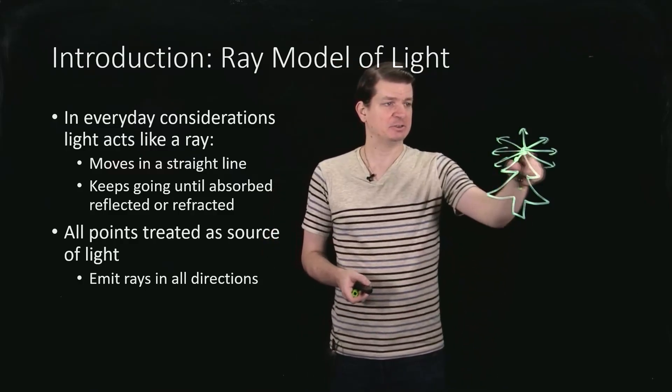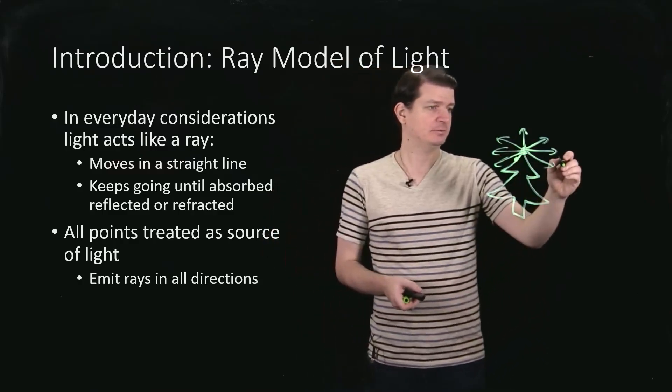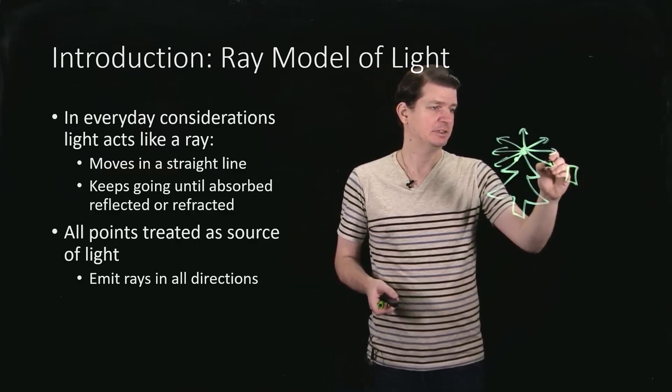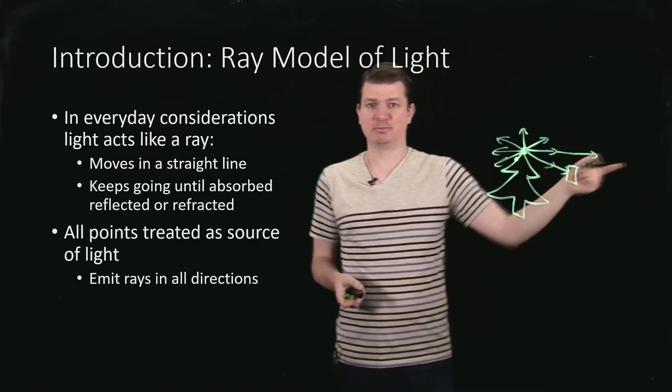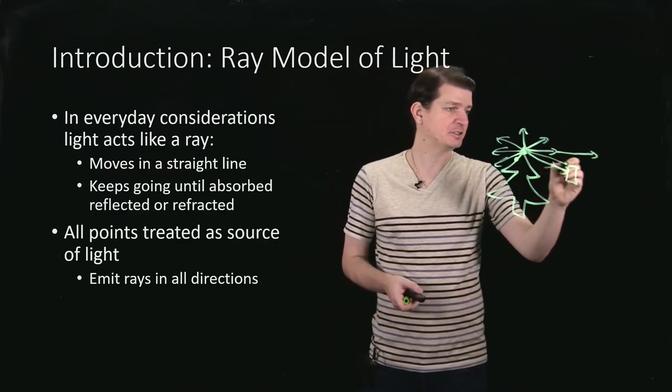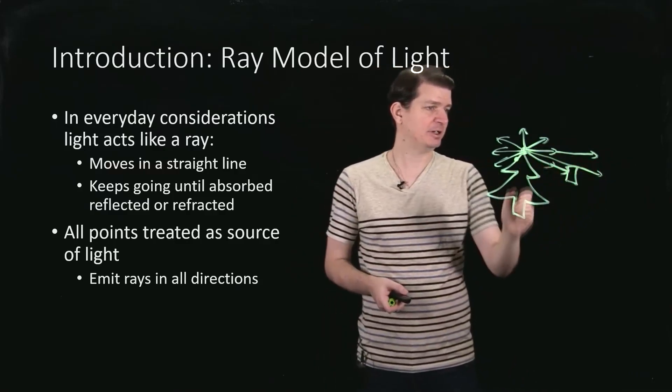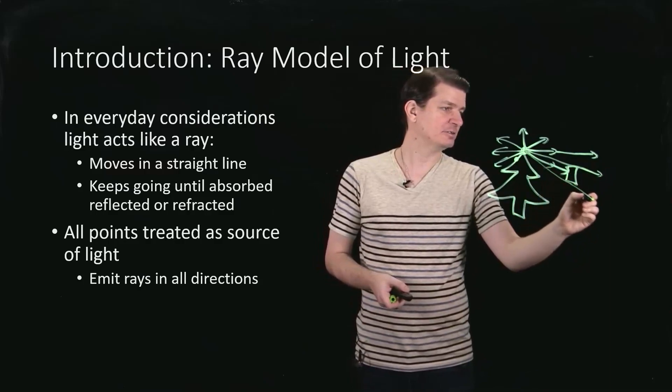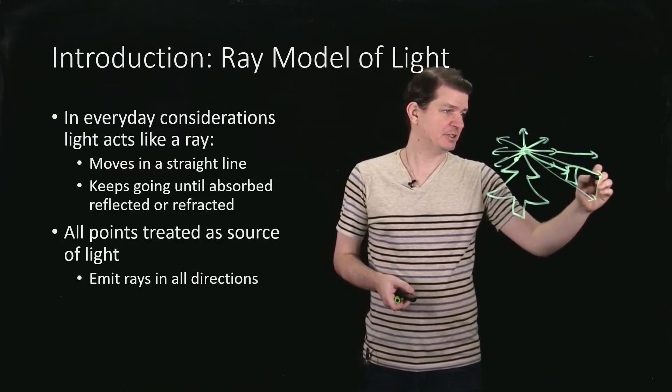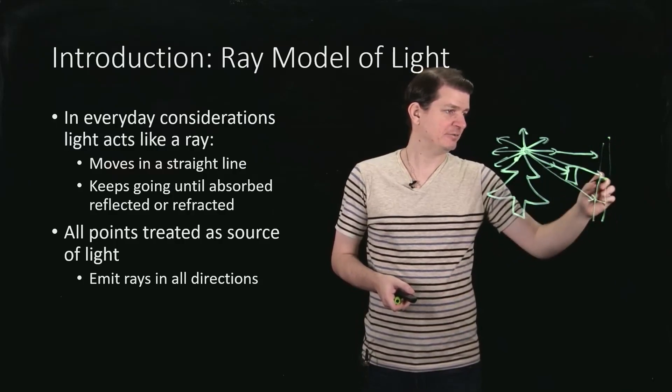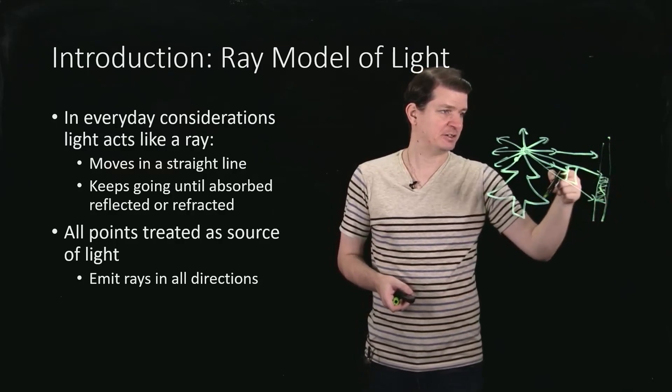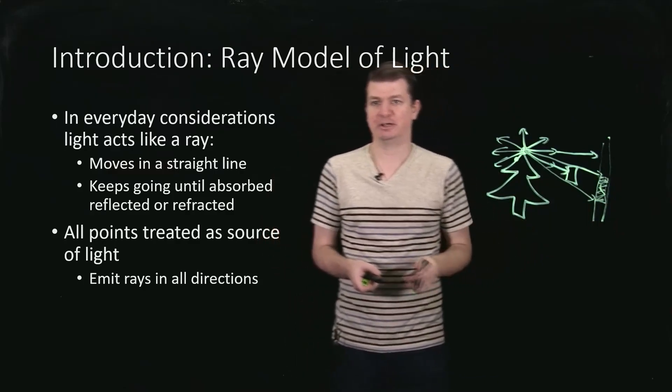And those rays will continue until either they hit something, so that one gets obstructed, that one obviously doesn't, it just keeps going. So this will be how I cast the shadow because that last ray that makes it by goes there, this one goes over here, and so all of this region, if I'm now projecting it onto some wall, all of that region would be dark as the shadow of that weird little rectangle thing that I've drawn there.